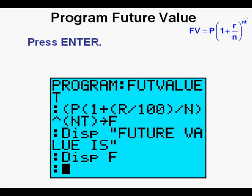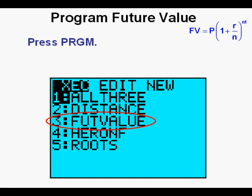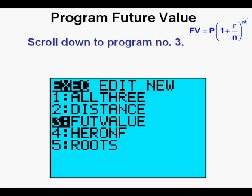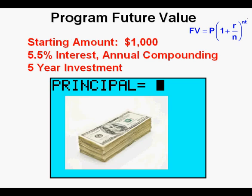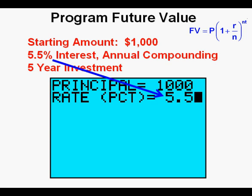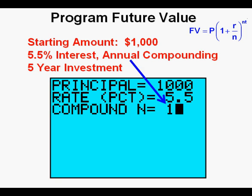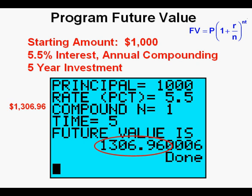Now we're ready to go to phase 3 of this presentation: applying the program. Press second, then the mode/quit key. We go to our new program by pressing the program key — we see our new program at number 3. Scroll down to program number 3 and press enter. For this usage, we'll have a starting amount of $1,000, an interest rate of 5.5%, annual compounding, and look at a 5-year investment. Enter 1000 for $1,000, press enter. Enter 5.5 for 5.5%, press enter. Enter 1 for annual compounding, press enter. Enter 5 for 5 years, press enter. We get a future value of $1,306.96.